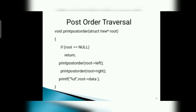Post-order traversal program: void print_postorder, struct tree star root. If root equals equals null, return. Print_postorder root pointer left. Print_postorder root pointer right. Printf percentage d, root pointer data. End of function.